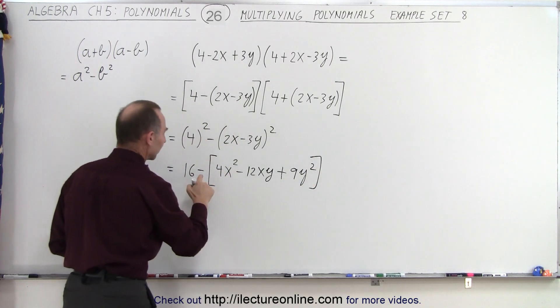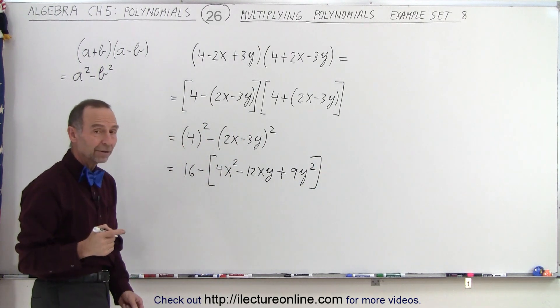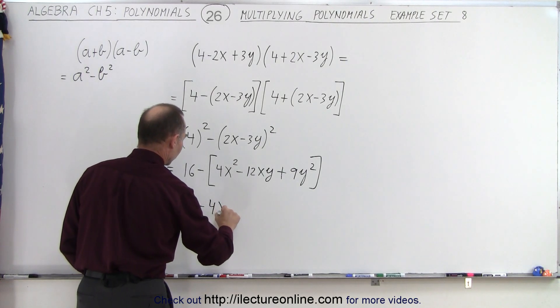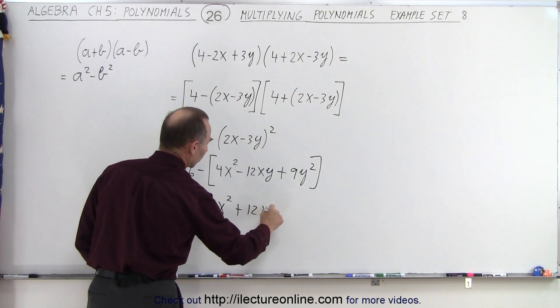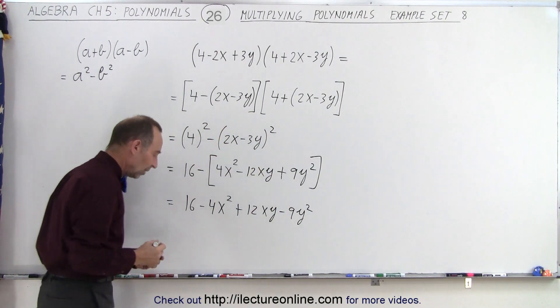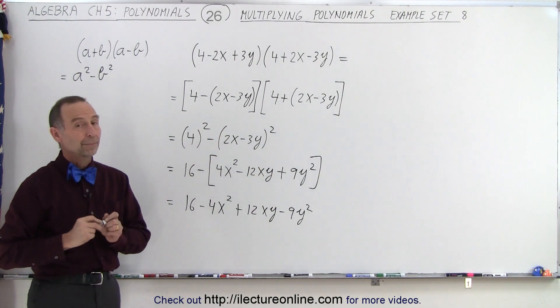Finally, we apply the negative sign to all these terms, and we get the following. This equals 16 - 4x² + 12xy - 9y². That is the simplified form of that product.